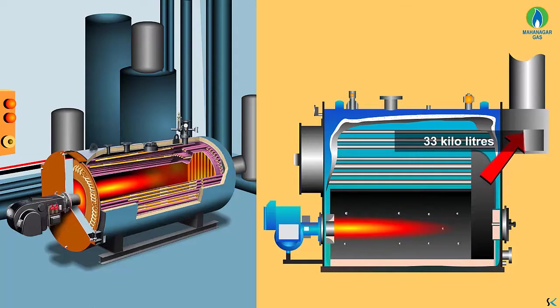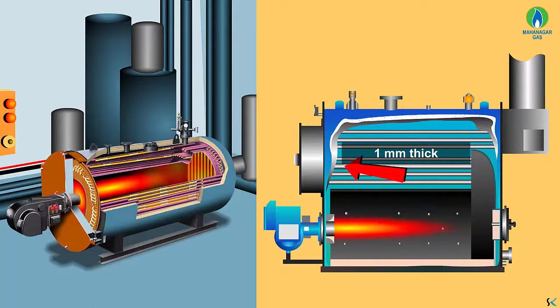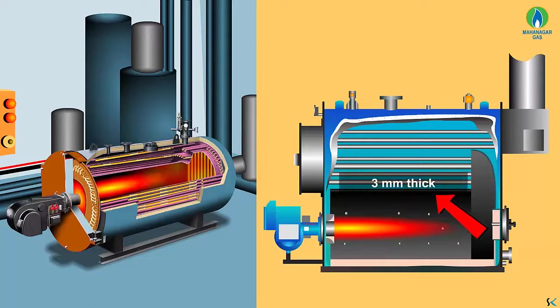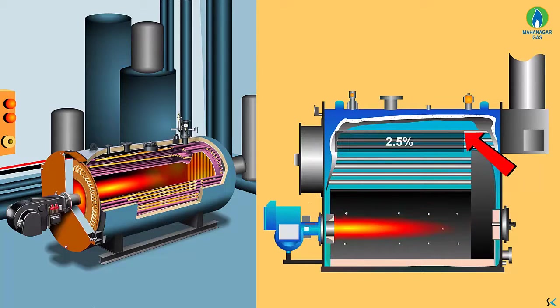Inspect for scale and sediment on the water side. 1mm thick scale deposit on the water side could increase fuel consumption by 5-8%. Inspect for soot, fly ash and slag on the fire side. 3mm thick soot deposition on the heat transfer surface can cause an increase in fuel consumption to the tune of 2.5%. Ensure process temperatures and pressures are correctly controlled.